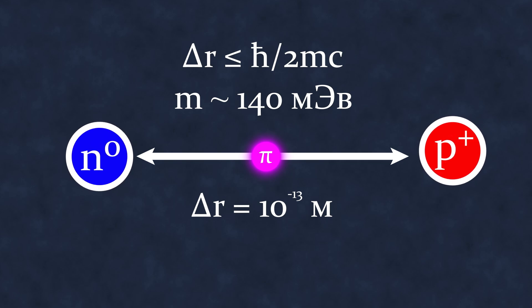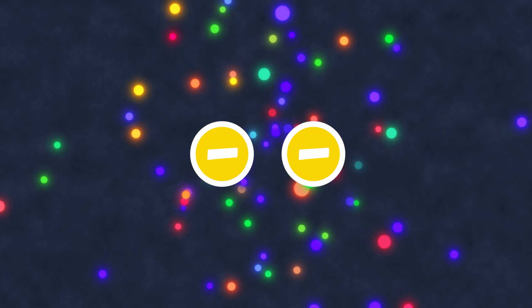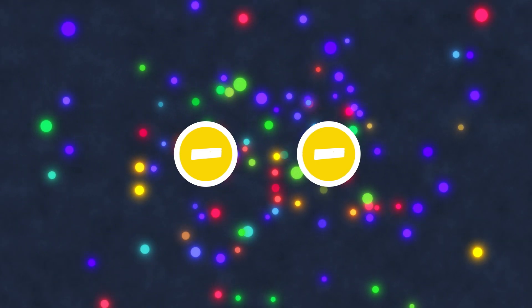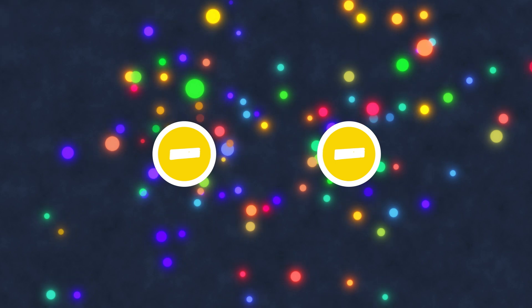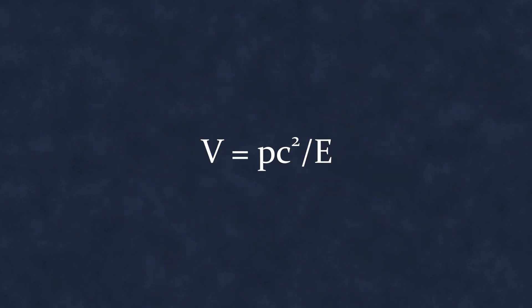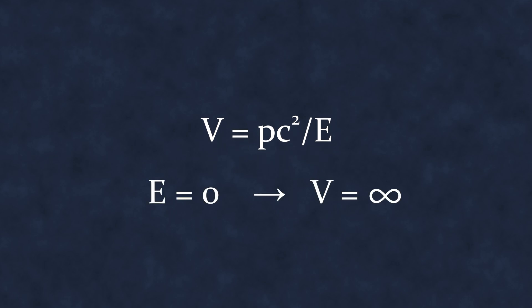This fact is often interpreted as virtual particles need some time to fly from one interacting particle to another. However, this is not entirely correct. According to the special theory of relativity, the speed of a particle is expressed through its momentum and kinetic energy by such a formula. For virtual particles, as we remember E equals zero, that is, we would get the speed of the particle equal to infinity.